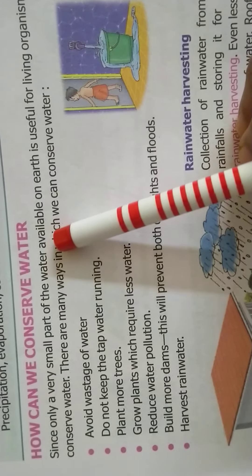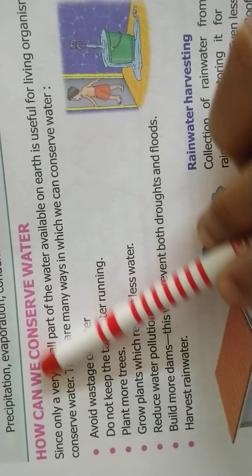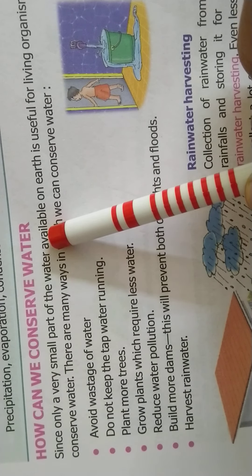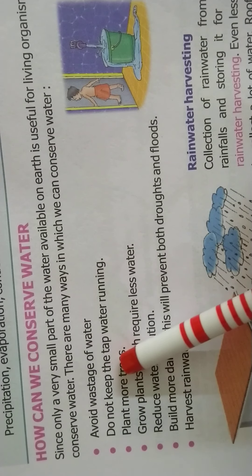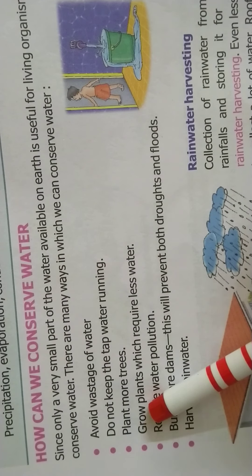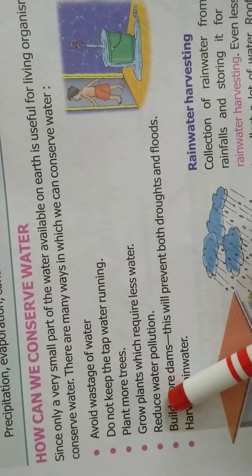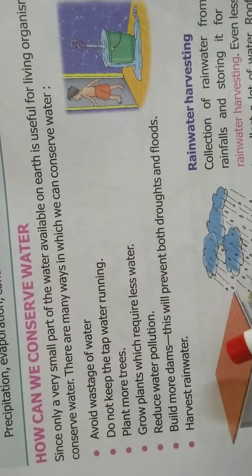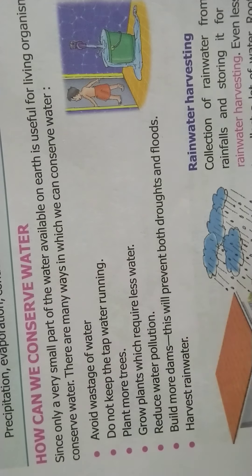How can we conserve water? We should avoid wastage of water. We should not keep the tap water running. We should plant more and more trees. We should grow plants which require less water. We must help to reduce water pollution. Build more dams which will prevent both drought and floods. And harvest rainwater.